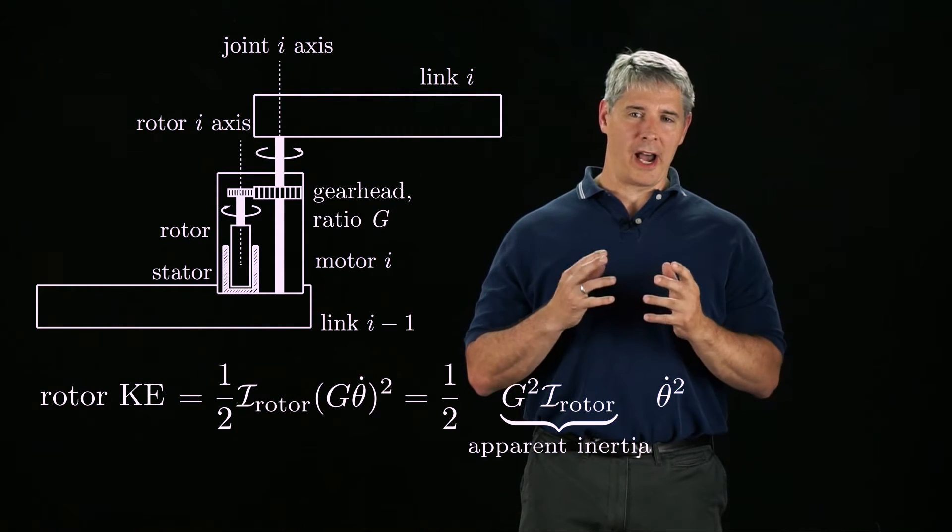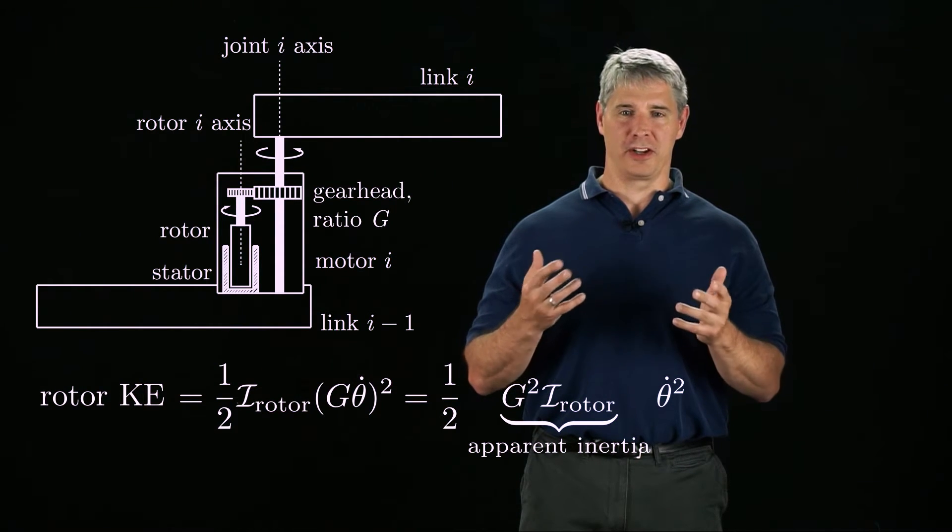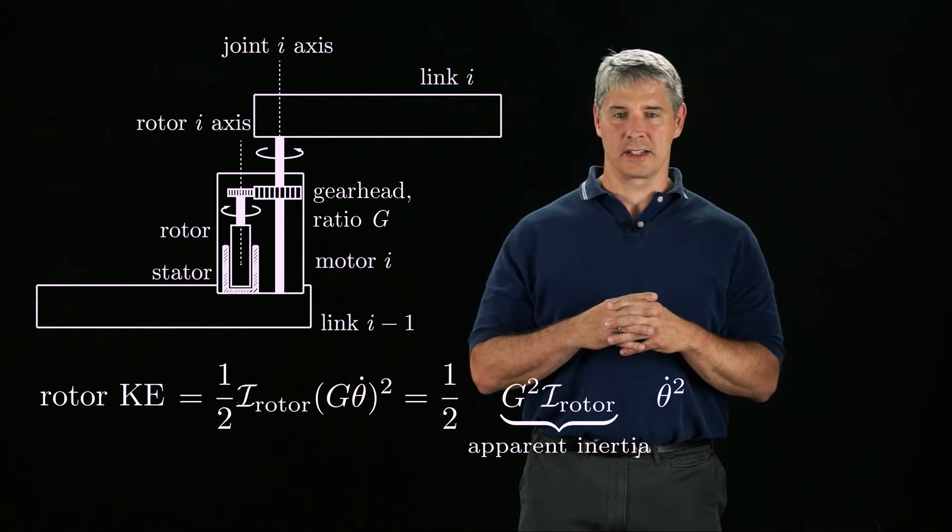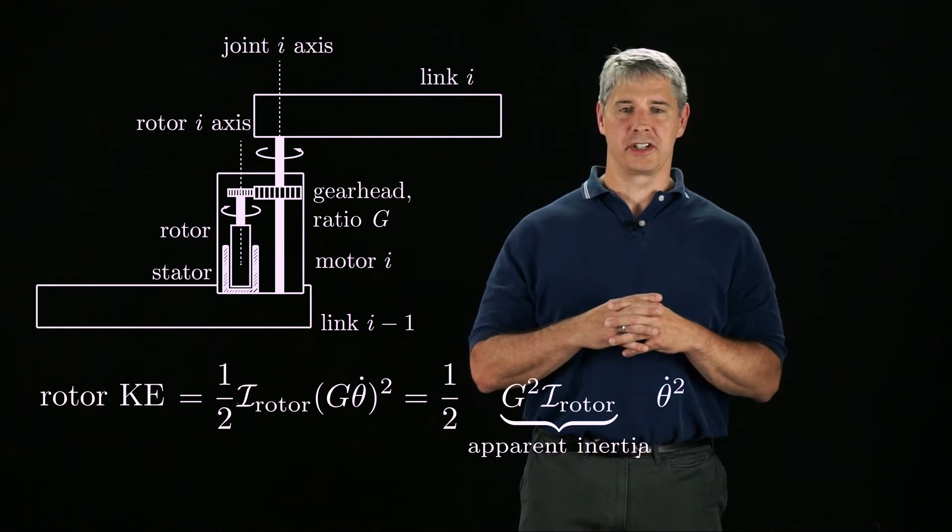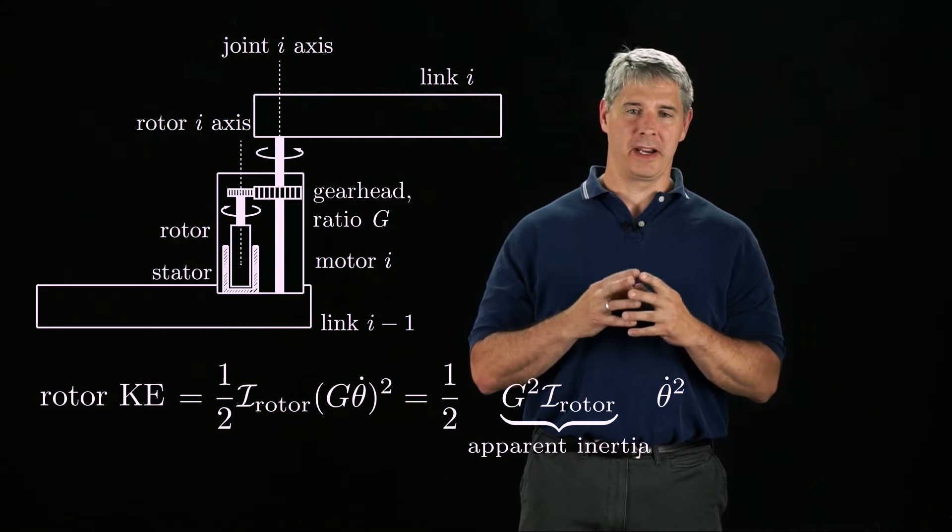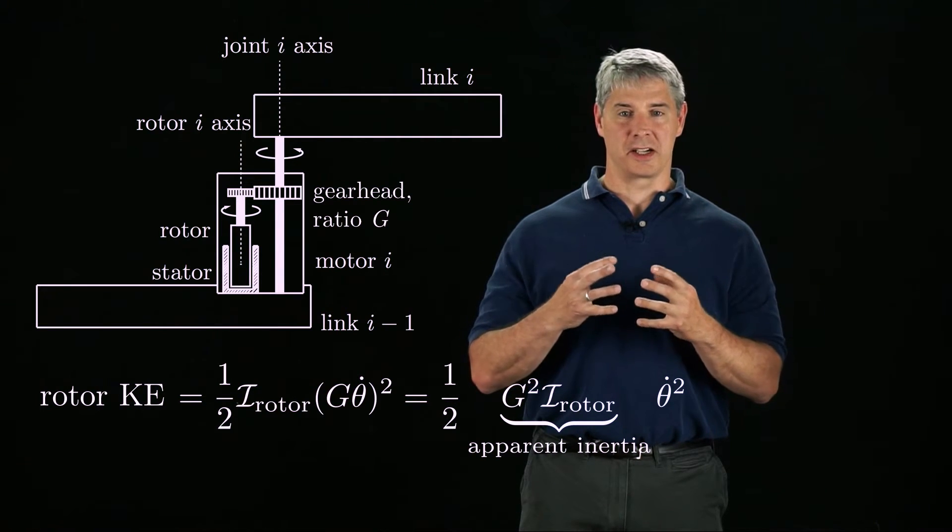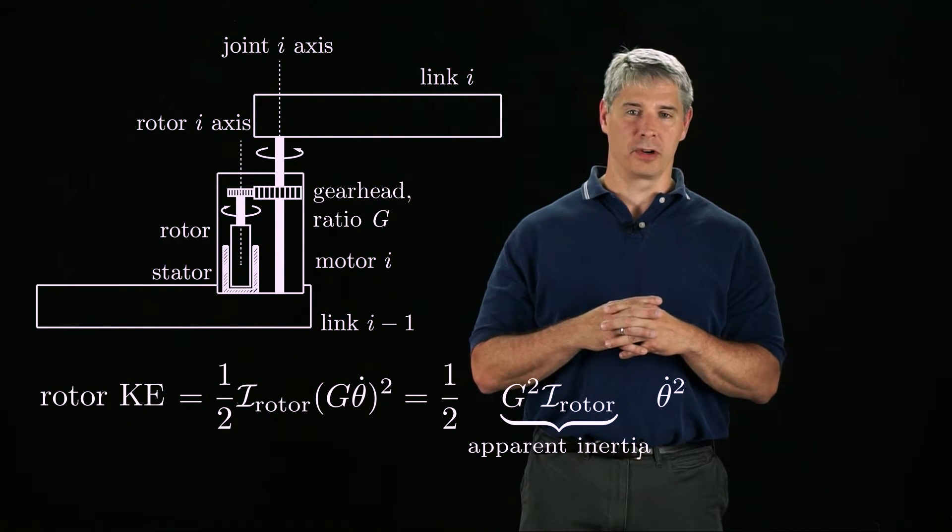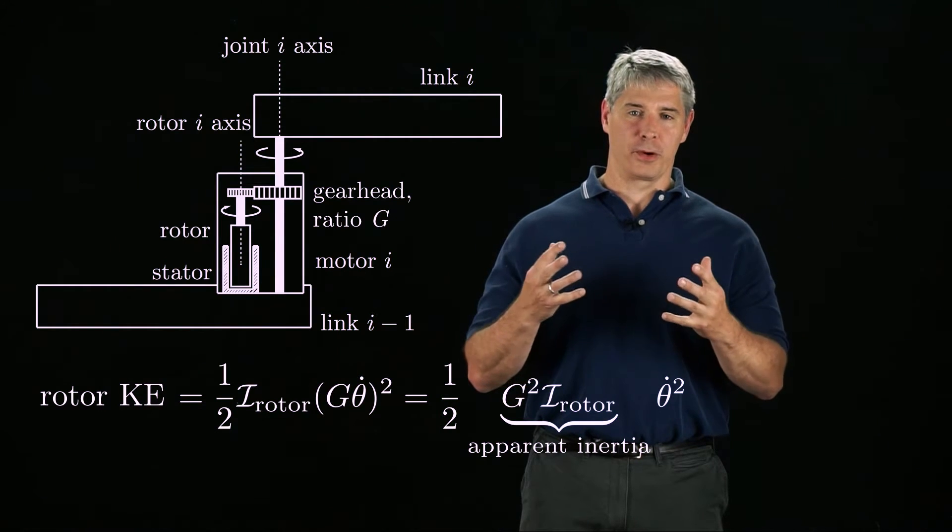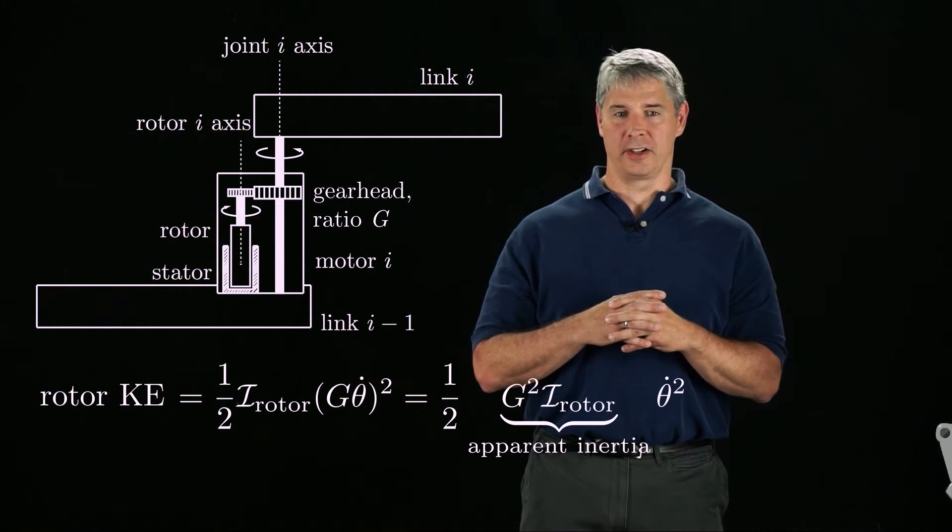So even though I rotor may be small compared to the inertia of the link about the joint axis, the apparent rotor inertia, G squared times I rotor, may not be small, especially considering that gear ratios of 100 or more are common. Therefore, the rotor inertia should be included in our dynamic analysis.